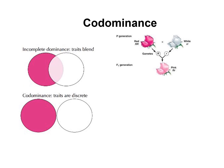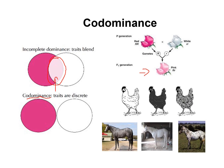If you remember, incomplete dominance and codominance can look very similar. If you read the Campbell Biology, you will see that at the molecular level — when we study the mechanisms, the genes, the proteins and how they interact — it can be a little more complicated. However, for these exercises we define them by their phenotypes.